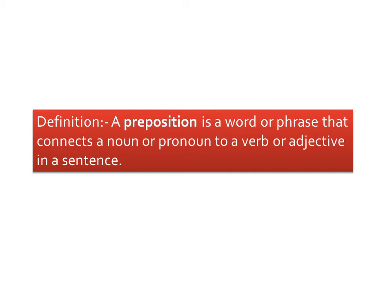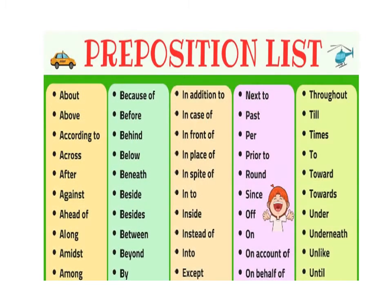Let us move to the list of prepositions. Here I have given the preposition list — the words begin with different alphabetical letters. First: about, above, according to, across, after, against, ahead of, along, amidst, among. Then: because of, before, behind, below, beneath, beside, besides, between, beyond, by. All these words present in the chart are prepositions. There are many prepositions — as you study more and more you will get the idea. These are all simple prepositions.